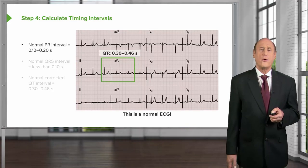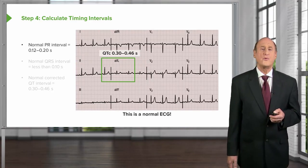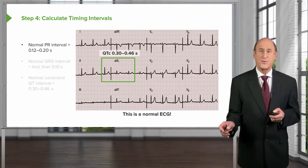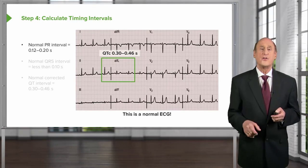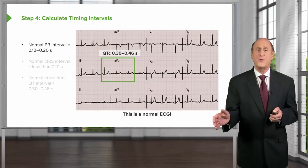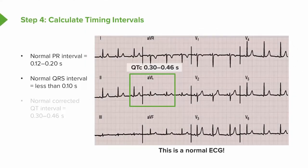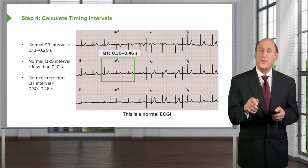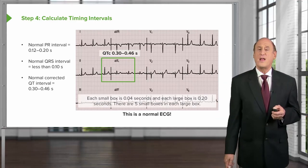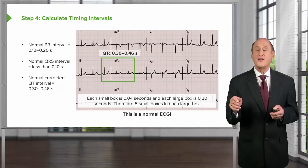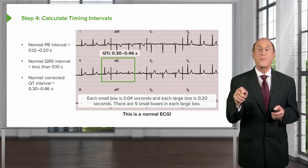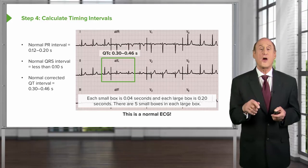Let's talk about the intervals. A normal PR interval is 0.12 to 0.20 seconds — that's three to five little boxes, since there are five little boxes within each bigger box. The normal QRS interval is less than 0.1 seconds, which is two and a half little boxes. The normal corrected QT interval is between 0.30 and 0.46 seconds, measured from the beginning of the Q wave to the end of the T wave. Each small box is 0.04 seconds, so a large box is 0.20 seconds.